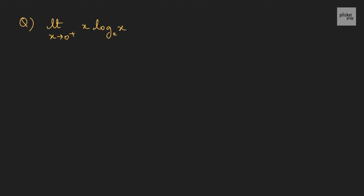Here we have the question: limit x tends to 0 plus of x into log x. Now, when you substitute the value 0, it is clearly 0 into infinity form. We can write this as limit x tends to 0 plus of log x divided by 1/x. These two are equal, and this particular expression is actually in the infinity/infinity form, at which point we can use L'Hospital's rule.